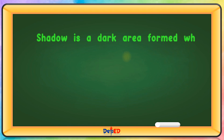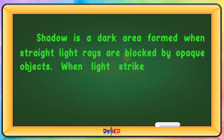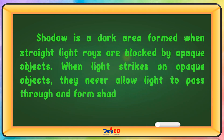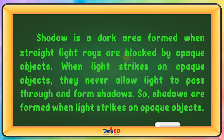Shadow is a dark area formed when straight light rays are blocked by opaque objects. When light strikes on opaque objects, they never allow light to pass through and form shadows. So, shadows are formed when light strikes on opaque objects.